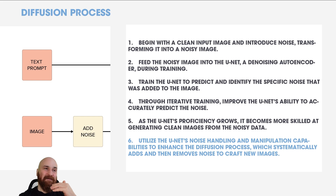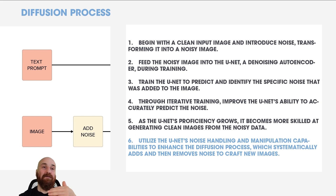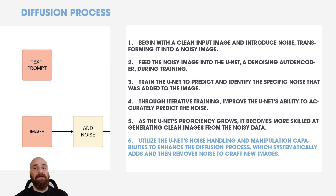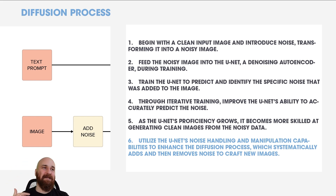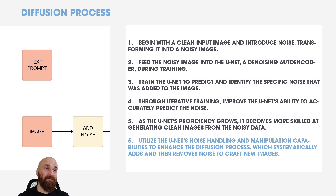You utilize UNet's noise-handling and manipulation capabilities to enhance the diffusion process, which systematically adds and removes noise to craft new images. That's essentially the whole story of the diffusion model: add noise, remove noise, again and again — with a UNet that becomes super skilled at predicting and removing noise from the system.